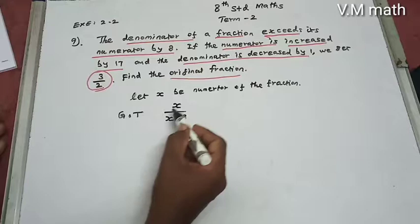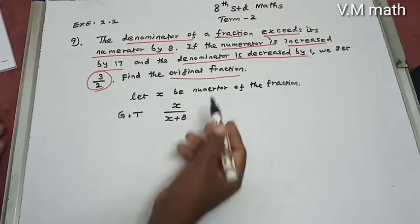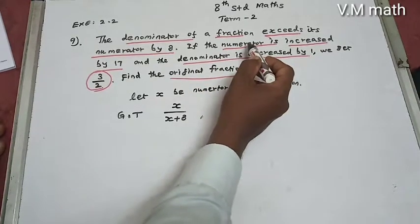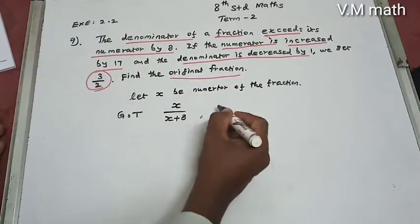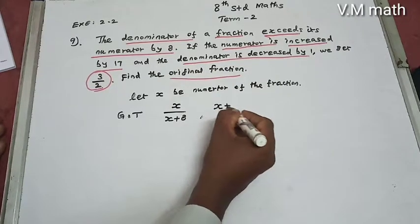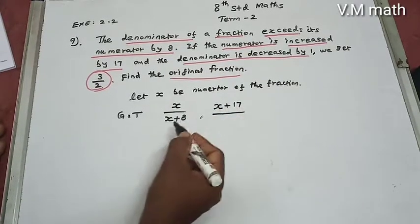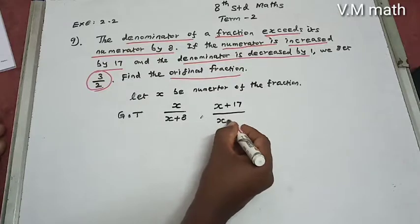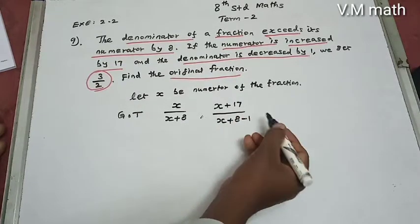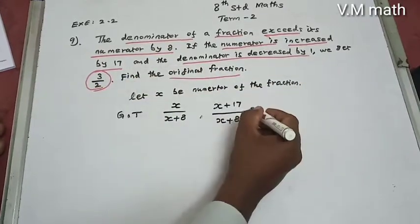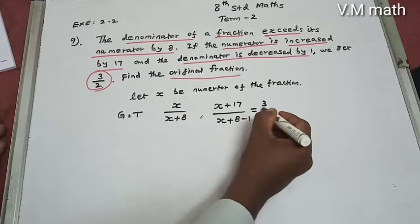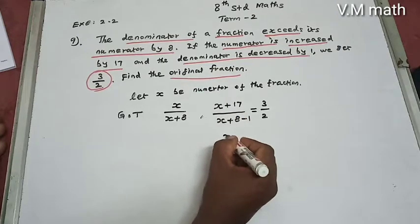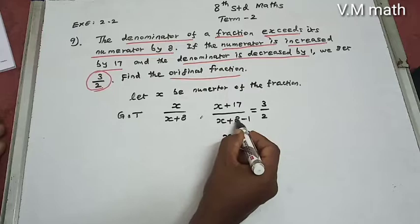By the first condition, numerator is x and denominator is x plus 8. Second condition: the numerator is increased by 17, so the new numerator is x plus 17. The denominator is decreased by 1, so the new denominator is x plus 8 minus 1, which is x plus 7. This equals 3 by 2.